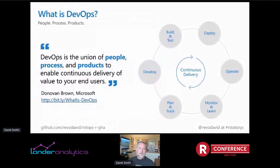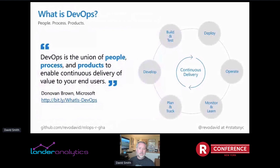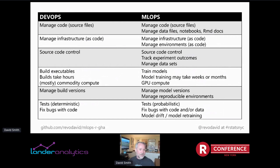In that talk I discussed DevOps — a process used to facilitate the development of traditional software like games and applications. A good definition from my colleague Donovan Brown is that DevOps is the union of people, process, and products to enable continuous delivery of value to your end users. We took that concept further to ask: can we apply these DevOps processes to machine learning? Working with data, delivering models — a process we call MLOps, machine learning operations.